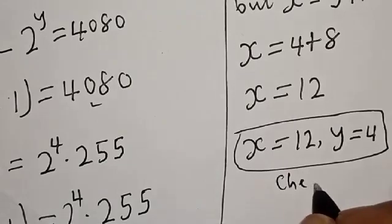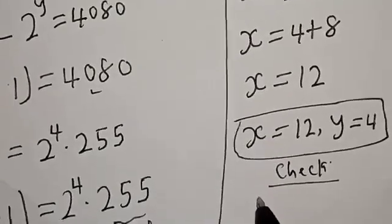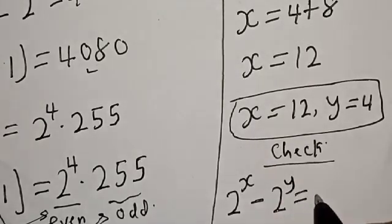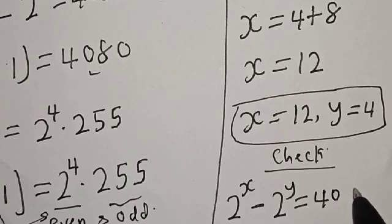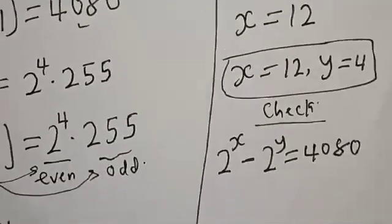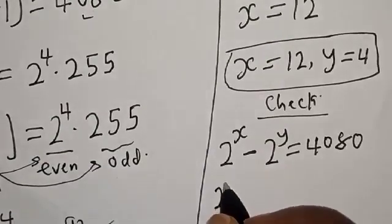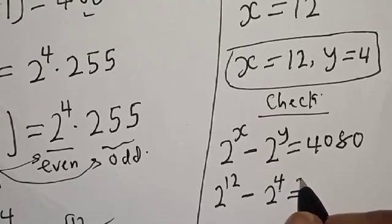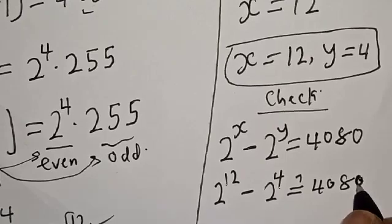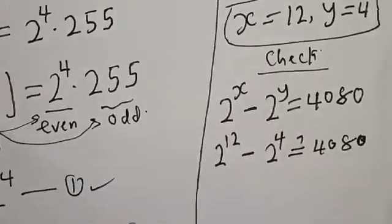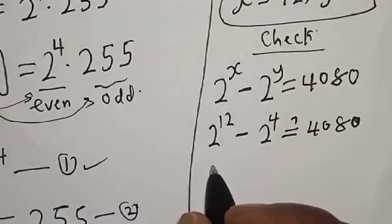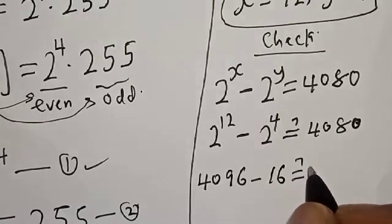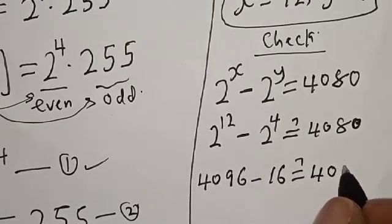We can check to confirm if our answer is right. We have 2 raised to power x minus 2 raised to power y. Our x is 12 and y is 4. So 2 raised to power 12 minus 2 raised to power 4 must equal 4080. That is 4096 minus 16.